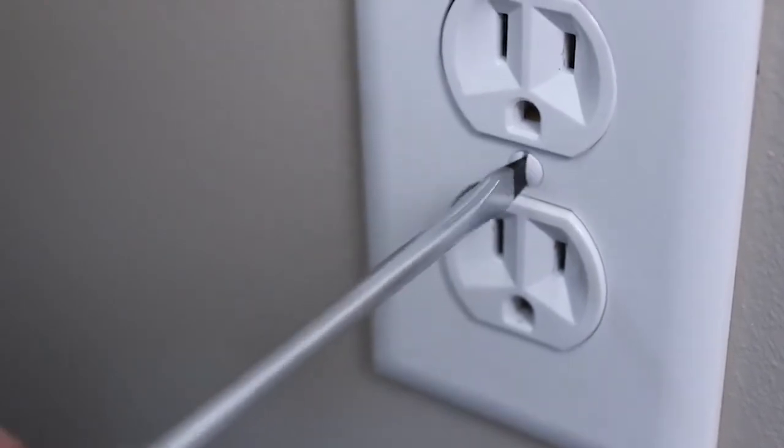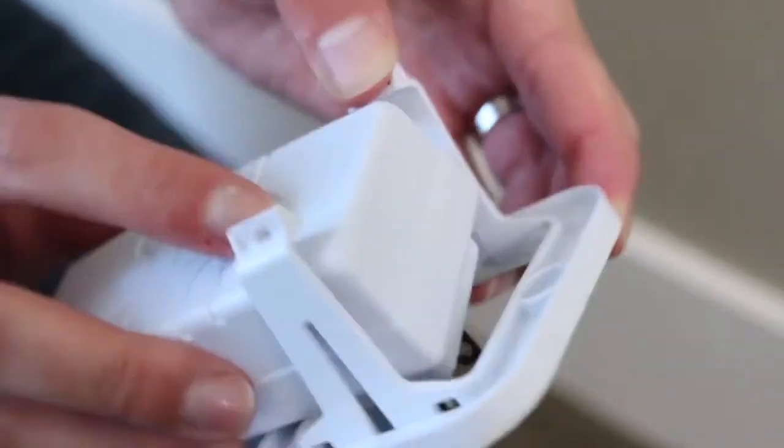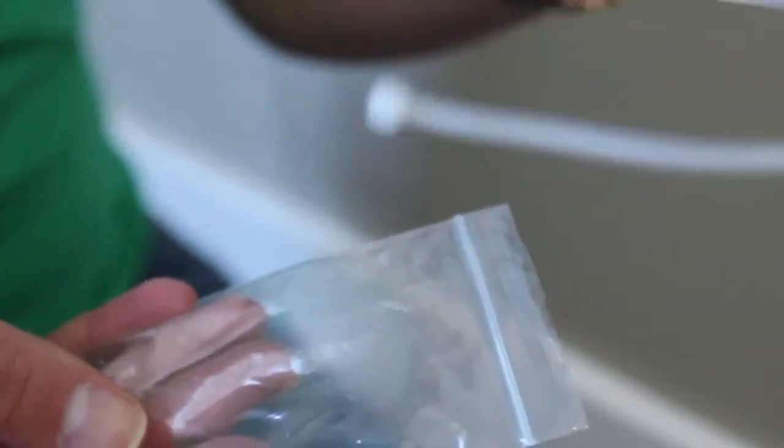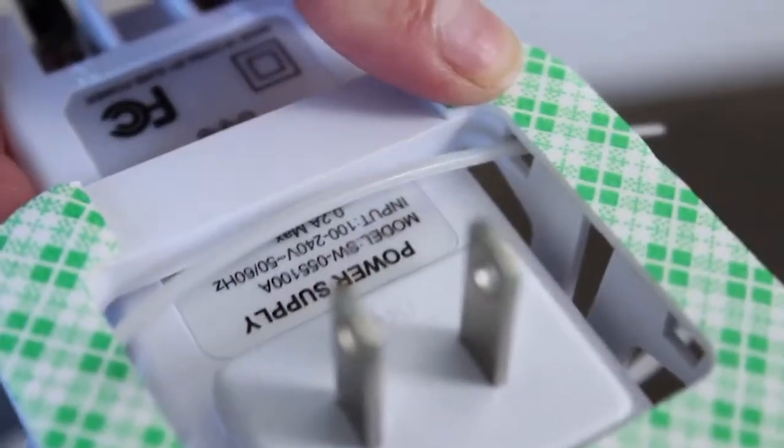Remove the existing screw from the outlet cover. Insert the power supply into the retainer bracket. Use the provided zip tie to secure the power supply to the retainer bracket.